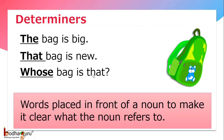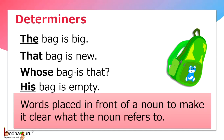Whose bag is that? Here, 'whose' is a determiner and it is coming before the noun, which is 'bag'. His bag is empty. 'His' is a determiner and it is coming before the noun, which is 'bag'.